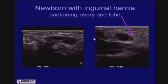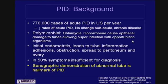This is an example of a newborn who has an inguinal hernia containing the ovary — there are some follicles in it — and in cross-section, here's the ovary with the fallopian tube next to it, also herniated.